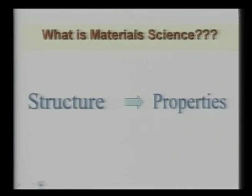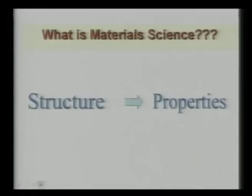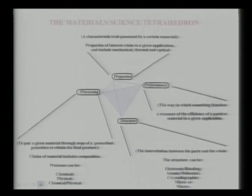Now, the question is: what is material science? Material science essentially deals with the structure-property relationship for different materials — how if the microstructure can be manipulated, that will influence the properties. That is the core concept of material science, and it can be applied to understand the behavior and properties of metals, ceramics, polymers, and composites. This is the famous tetrahedron of material science.